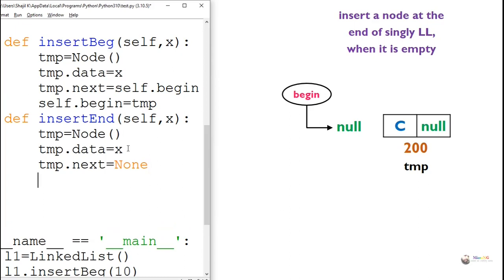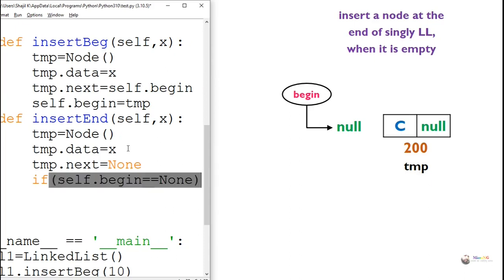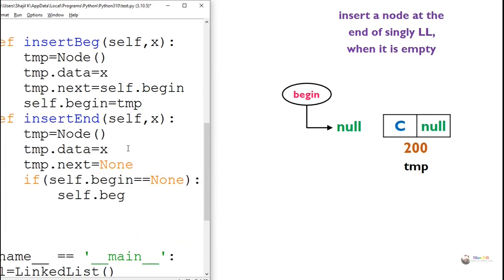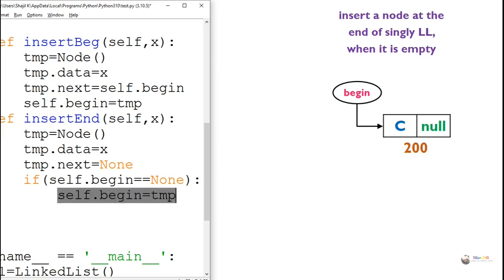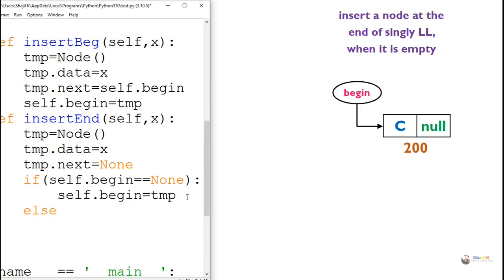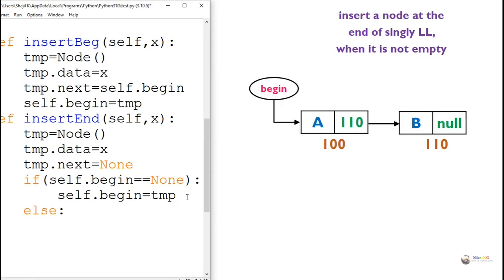Now we check whether the linked list is already empty by checking the value of begin. If begin is none, that means the linked list is currently empty. So temp will be the first node of the linked list — even if we are inserting at the end, it will become the first node. So begin should be assigned with the value of temp.